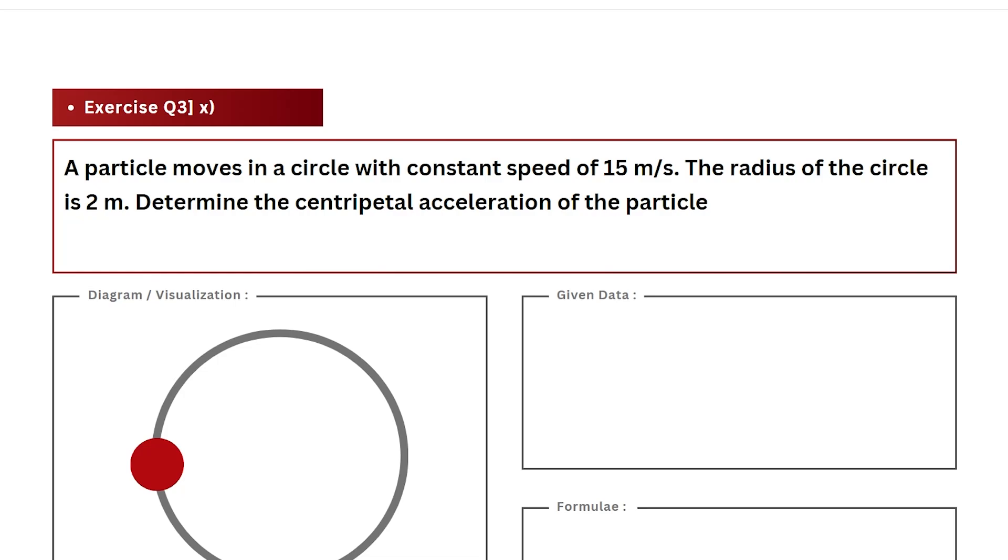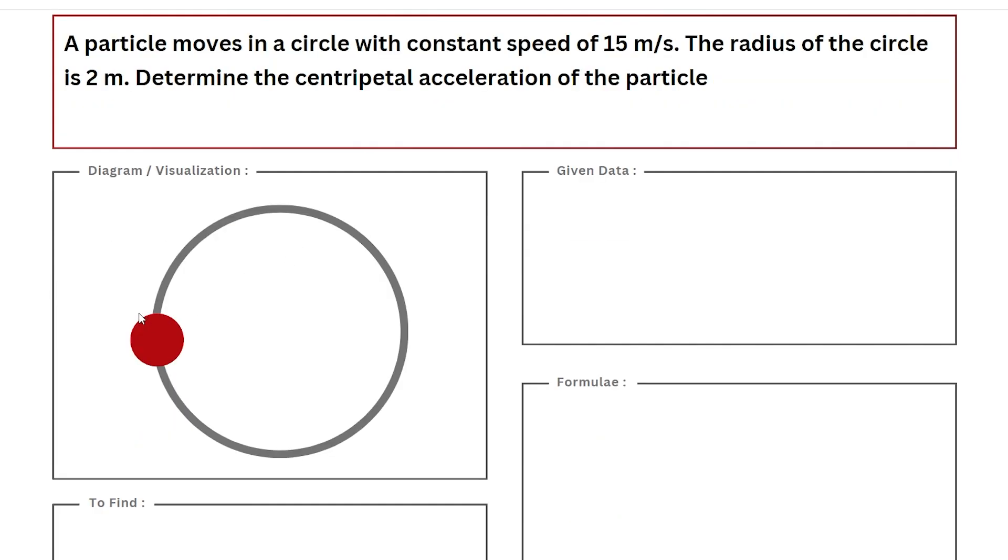Hi, in this video we're going to solve the 10th numerical from the exercise for the chapter Motion in a Plane. In this particular question we have a particle that is performing circular motion, and we have been given its velocity and the radius of the circle. Based on this, we have to find the centripetal acceleration.